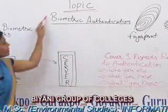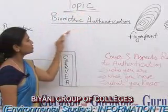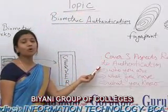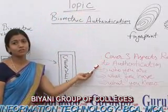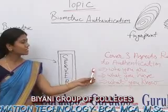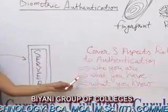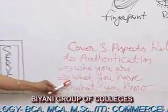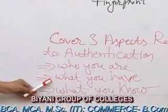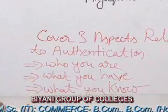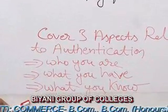Biometric Authentication covers three aspects related to authentication. The first aspect is who you are, the second aspect is what you have, and the third aspect is what you know.